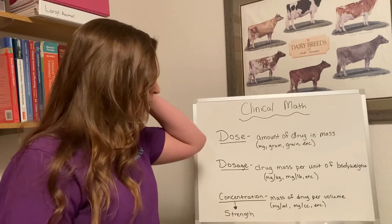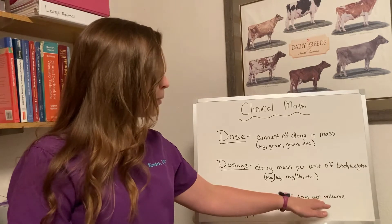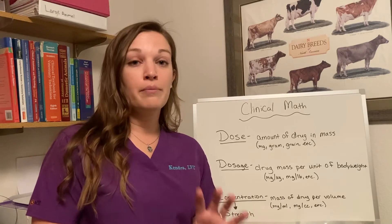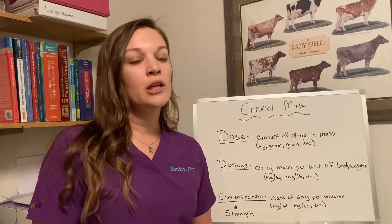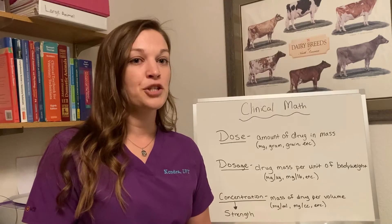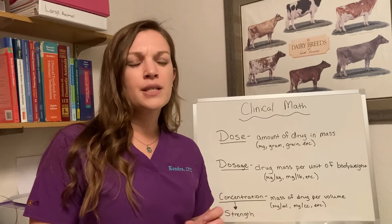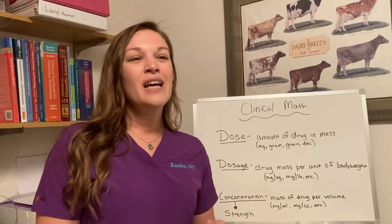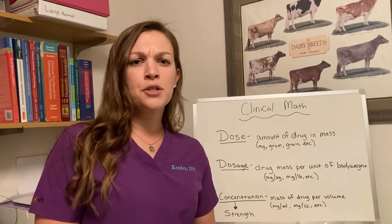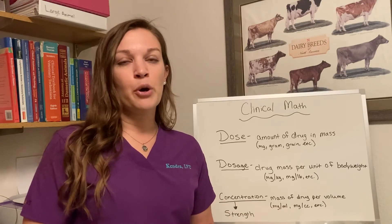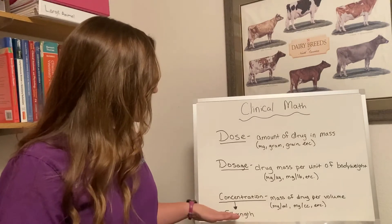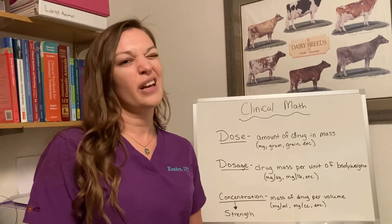Our last definition is concentration — the mass of the drug per volume. This is where we see labels like milligrams per milliliter or mg/mL. There is also a subset definition here: strength. When we refer to things like tablets and capsules, strength is a more appropriate term, as it's milligrams per capsule or tablet, as opposed to the volume of a liquid drug.